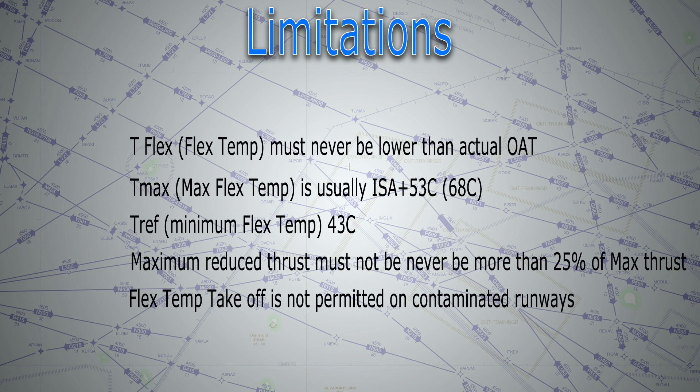T ref, or the minimum flex temperature, is 43 degrees. So we get the margin of the temperature for which we can use as flex between 43 degrees and 68 degrees maximum. And guys, I'm talking here about the Airbus, which is specifically the A320. Next, maximum reduced thrust must never be more than 25 percent of maximum thrust.